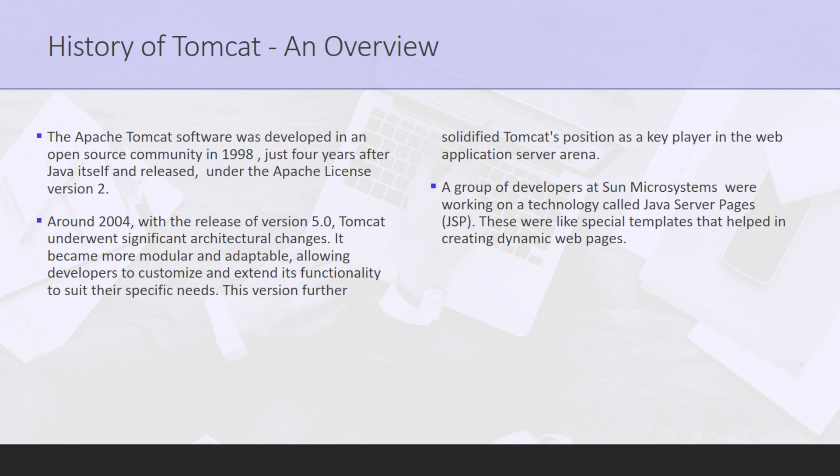Around 2004, with the release of version 5.0, Apache Tomcat underwent significant changes in architecture. It became more modular and adaptable, allowing developers to customize and extend its functionality to suit their specific needs. This 5.0 version further solidified Tomcat's position as a key player in the web-based application server arena.